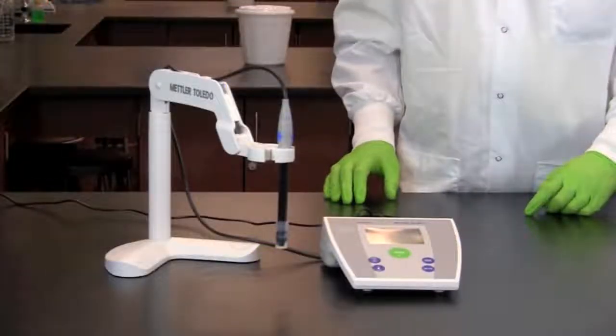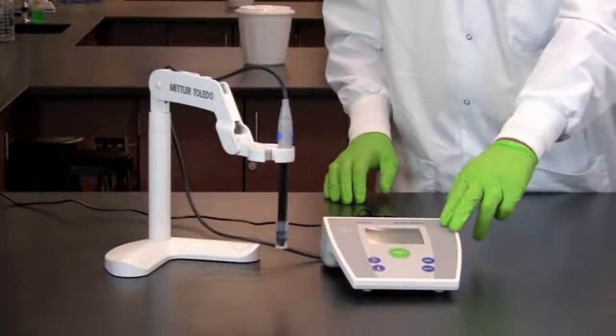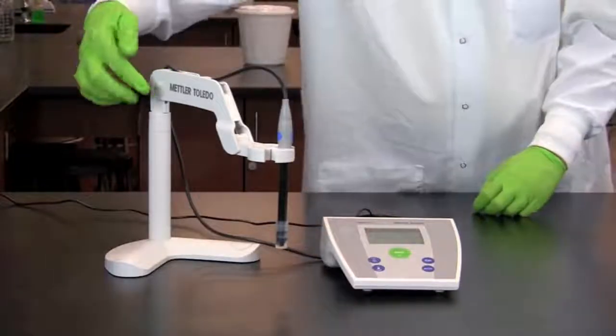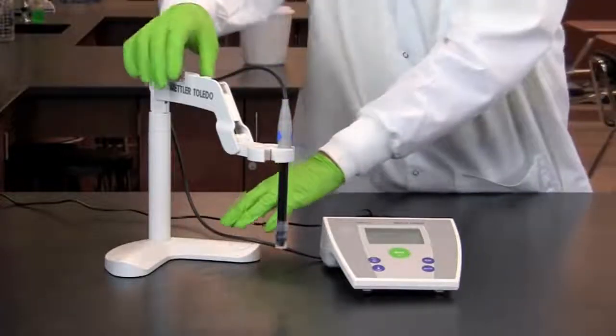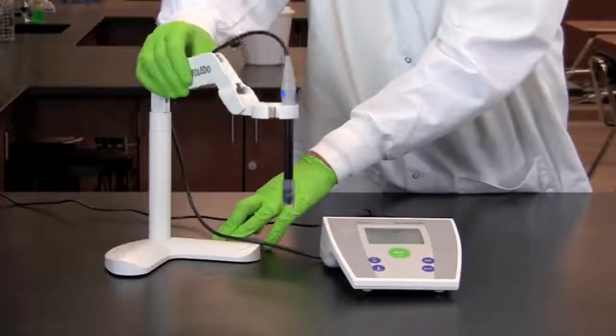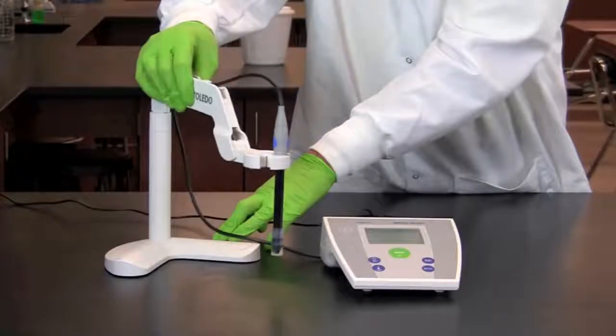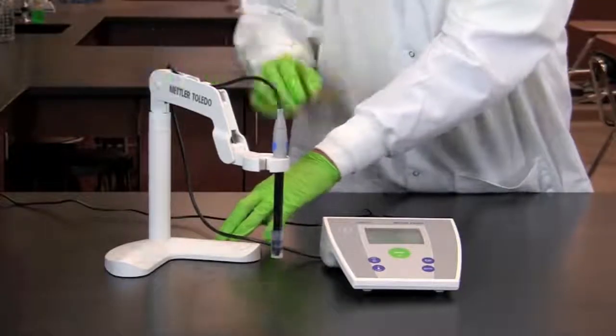The parts of a pH meter include the meter, the arm, and the electrode. The arm allows the electrode to be easily moved up and down into a beaker with a sample to be tested.